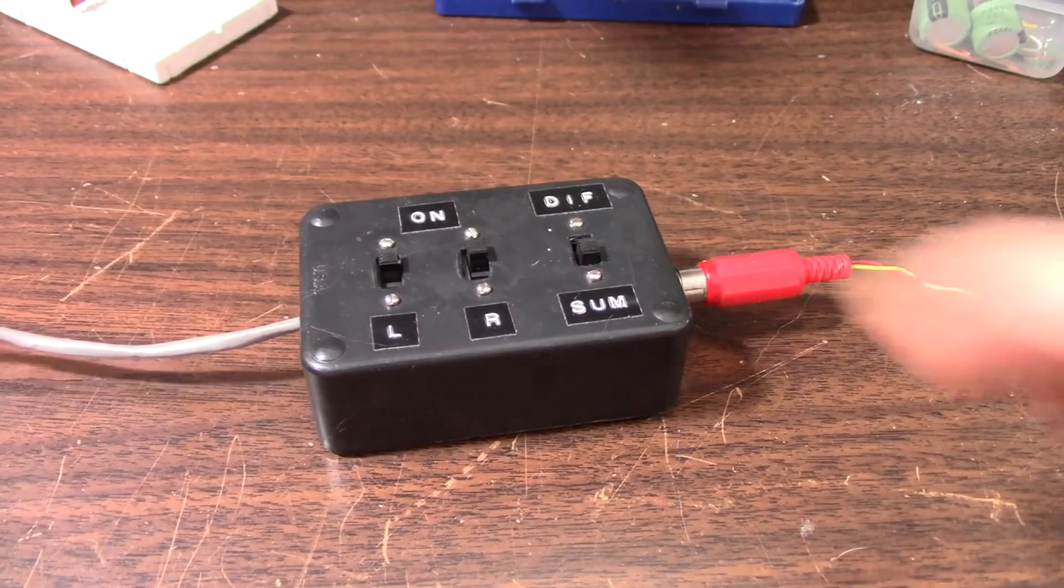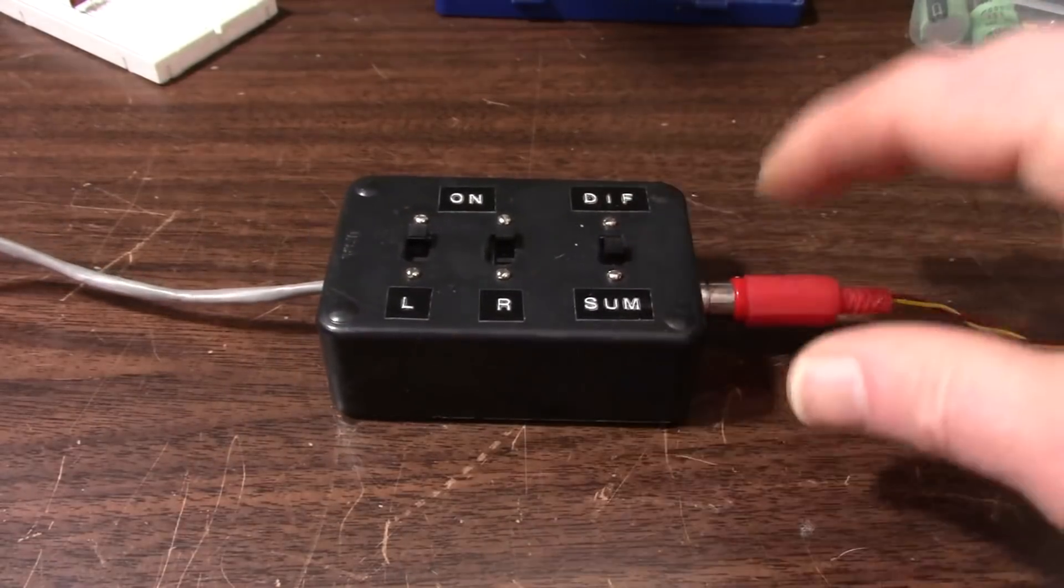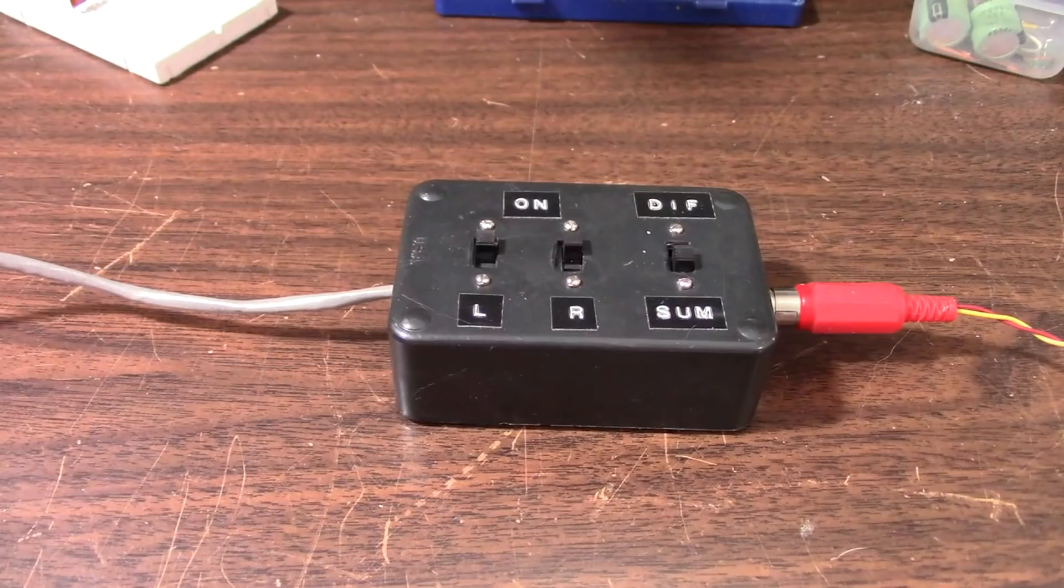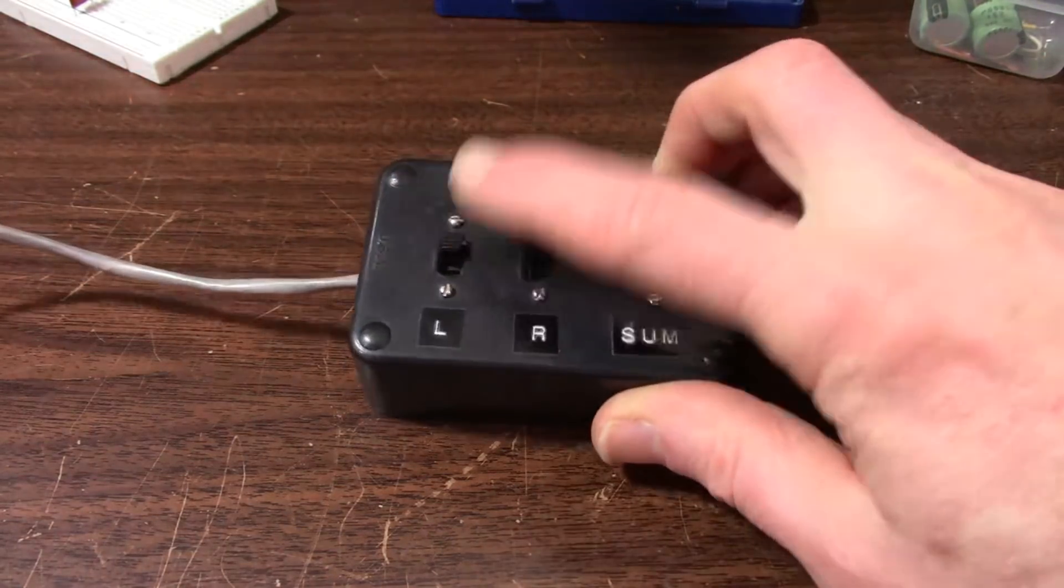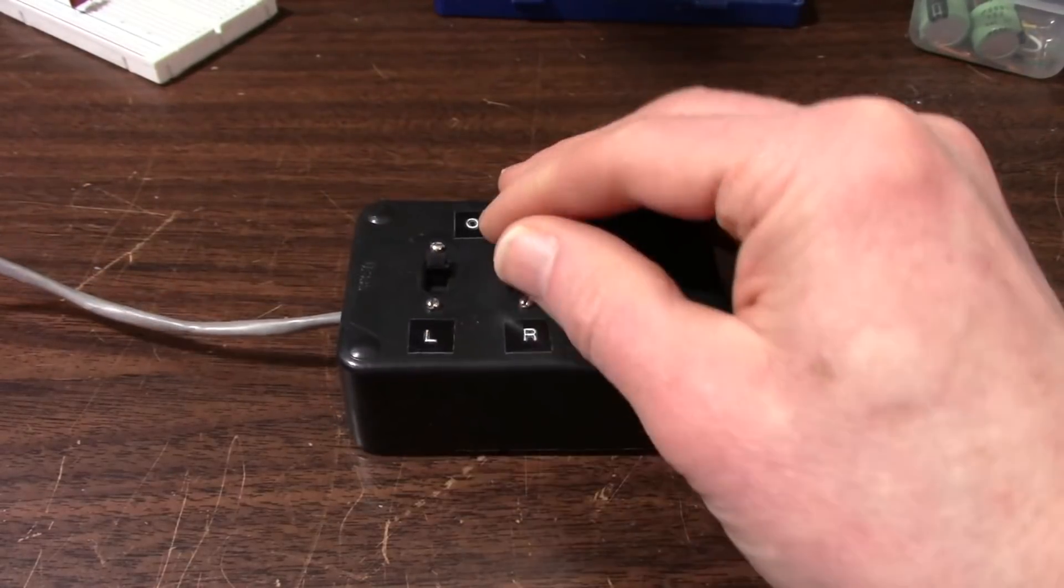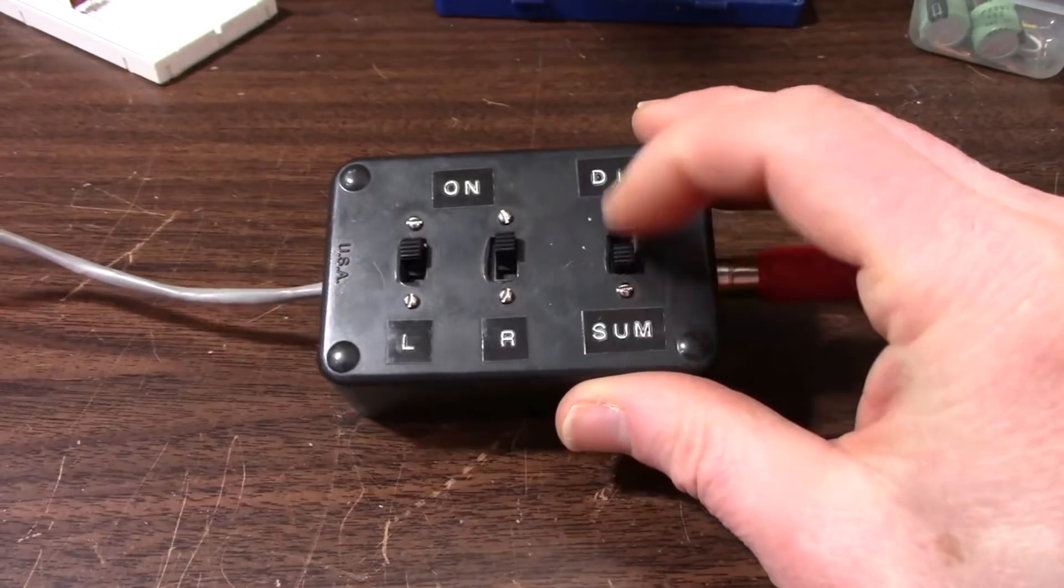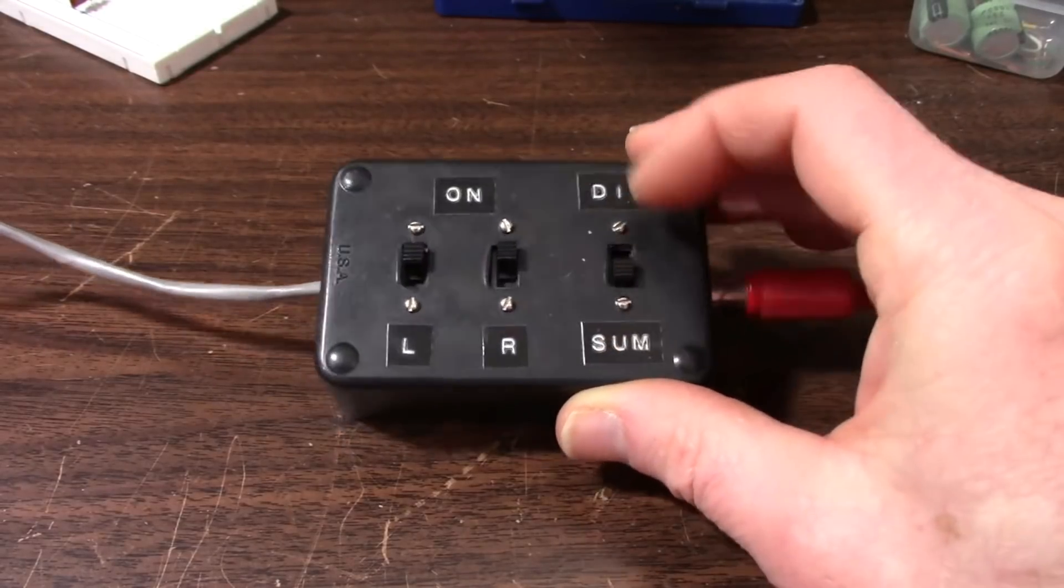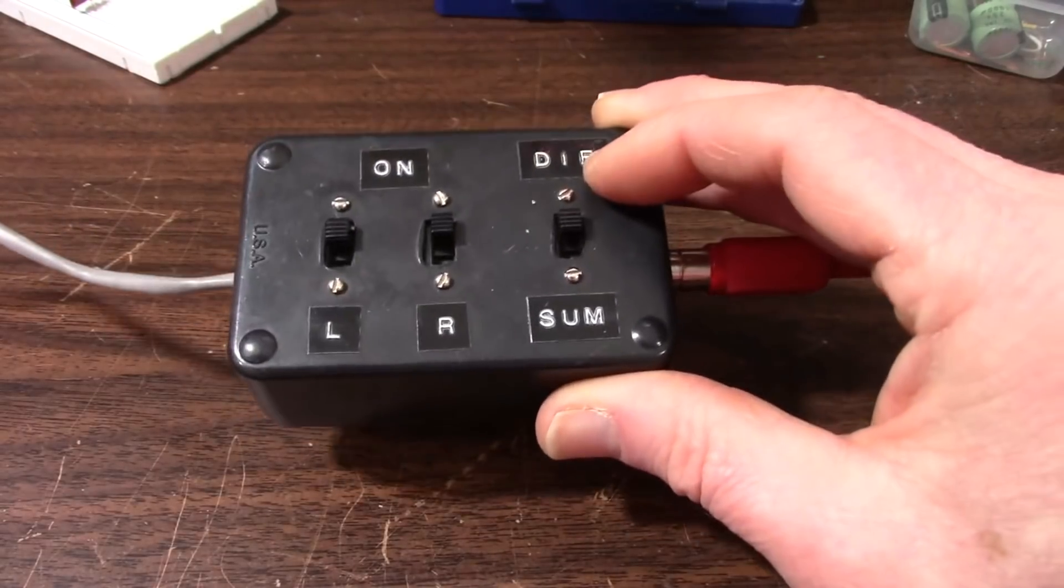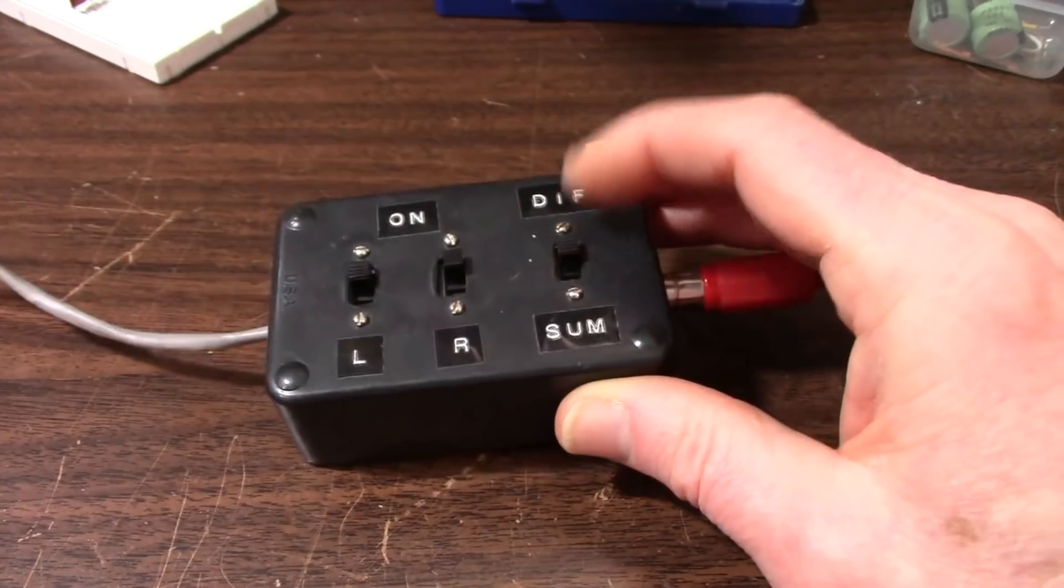So what does this thing do? Well it basically takes the stereo signal and mixes it together into just a mono channel. And you see there's three switches on here so it does a little more than just that. It allows you to listen to either the left or the right channel or switch them both out for mute. It has of course the sum switch but probably the most interesting mode on here is the differential switch where it takes the two signals and instead of summing it actually subtracts them.